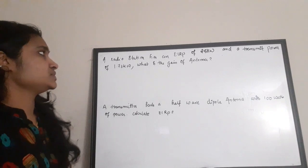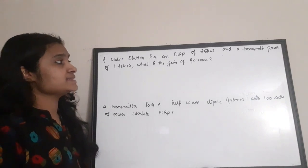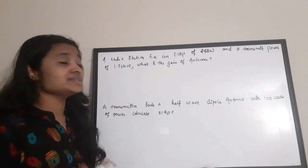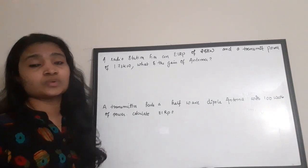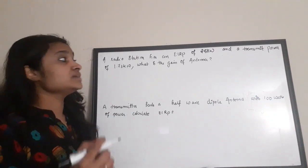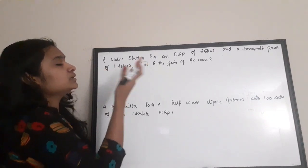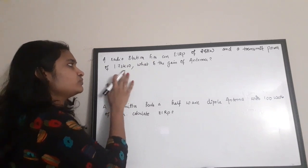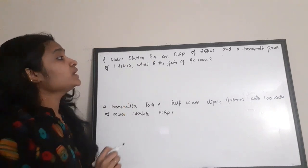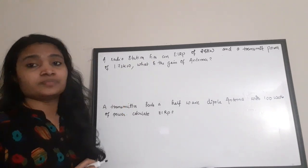Starting with the first question: a radio station has an EIRP — effective isotropic radiated power — of 25 kilowatts and a transmit power Pt of 1.73 kilowatts. What is the gain of the antenna?